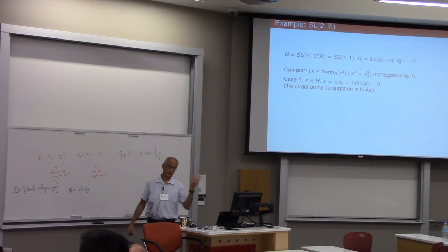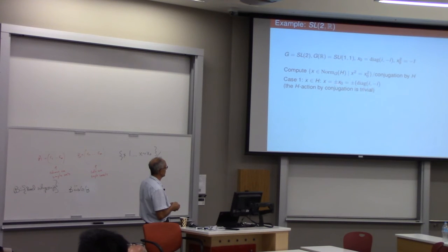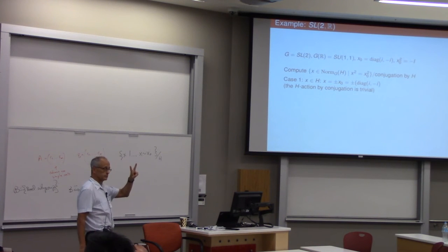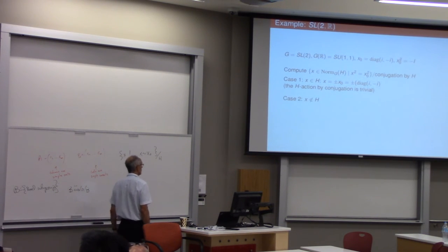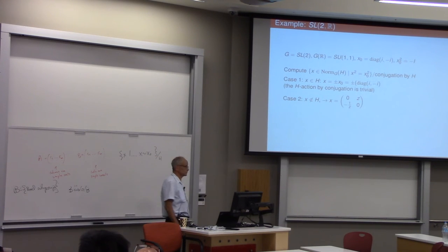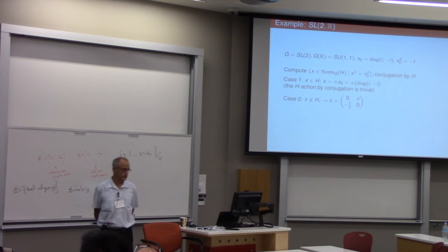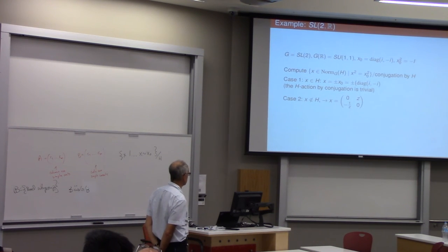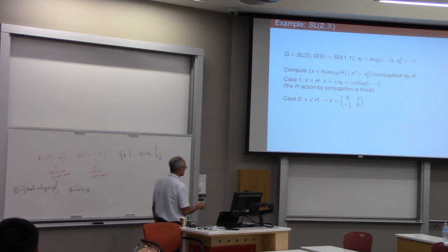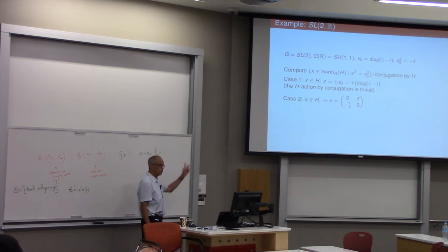And H acting by conjugation on itself is trivial. So there's nothing else to mod out by. So there are two elements, those two right there. Case two: X is not in H. Well, the normalizer of H has two components. The other one is these matrices: zero Z, minus one over Z, zero. And we only want the ones which are conjugate to I minus I. Well, it turns out they're all conjugate to I minus I. The eigenvalues of this matrix are I minus I independent of Z. So all of those X's are allowed. And notice that X squared is also minus one, which is central. And here's an easy exercise: all of those elements are conjugate by H. If you conjugate this matrix by the appropriate diagonal matrix, you can change Z to anything else. So after modding out by that conjugation, well, they're all conjugate. They have the same square. After modding out by that, you can just take one of them. And of course, the convenient one is to take Z equals one.